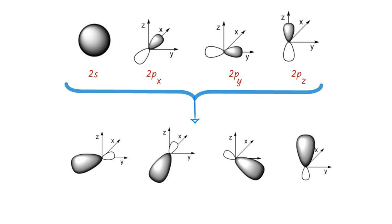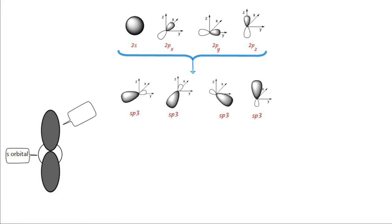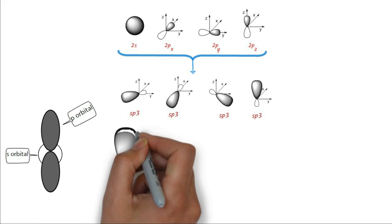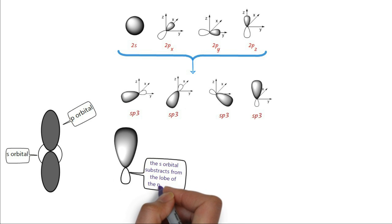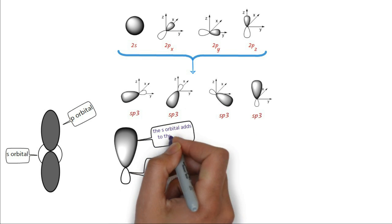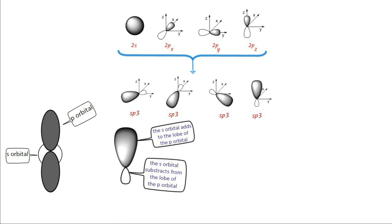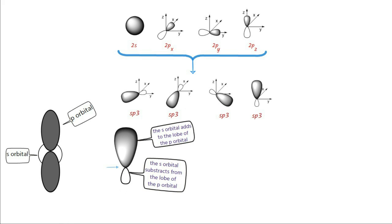The sp3 hybrid orbital has two lobes like p-orbital, except that these are of different size. The mixing of s with p-orbitals can be depicted like this. The small lobe of hybrid orbital is formed when s orbital subtracts from the lobe of p orbital, making it smaller than the other, which is formed by addition of s orbital to the lobe of p orbital. The larger lobe of hybrid orbital is used for overlap during bond formation.